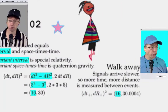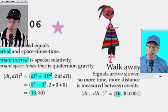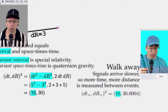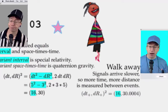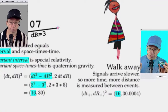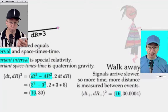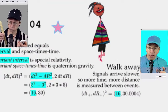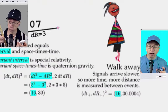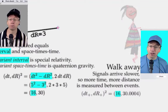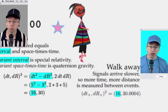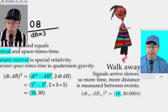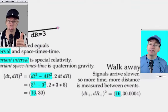Now let's think about that girl walking away. She's going to get the news a little bit later, so her time dt is going to be a little bit larger, and the distance is going to look a little bit bigger to her. There's nothing wrong with these watches or rulers — it's just that by comparison with the reference, things look a little different. When we square the larger dt and larger dr, the interval is exactly the same as the reference observer, and also no different from the walking-toward girl. The space-times-time, made of a larger time and larger space, is therefore larger than 30.